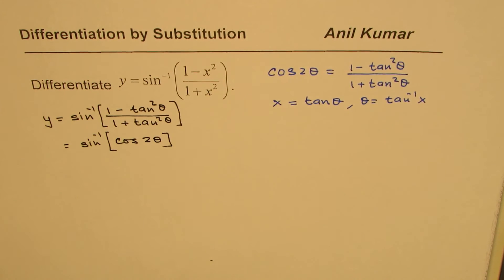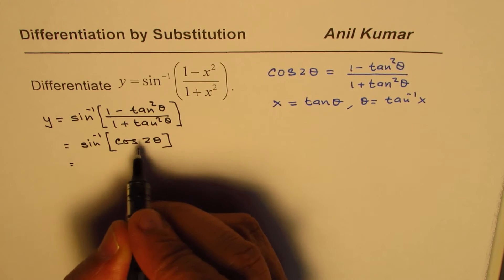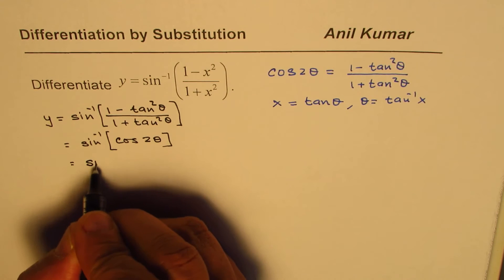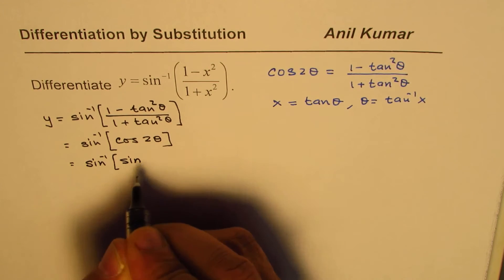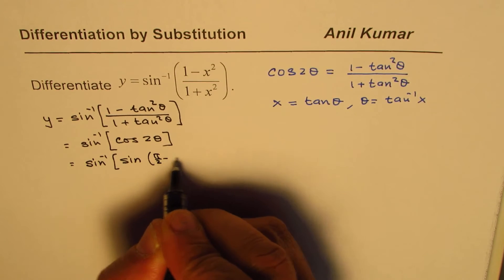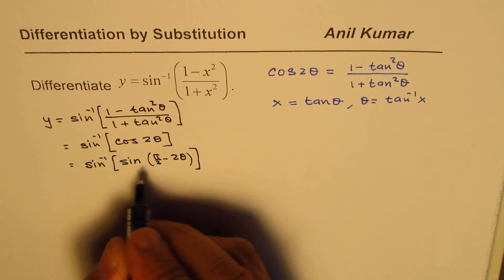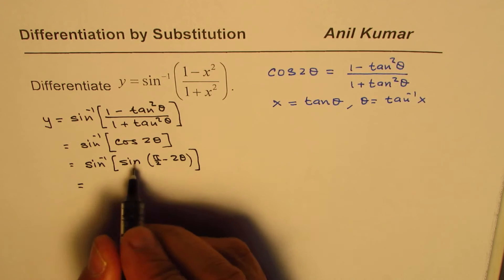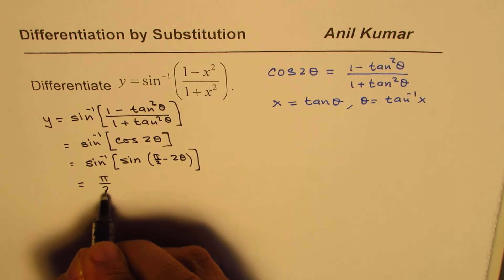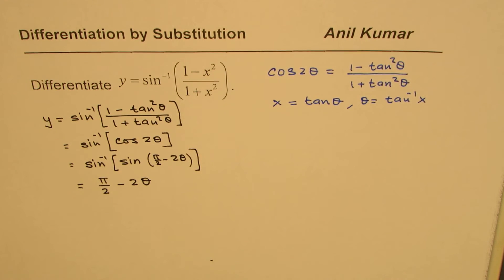How will that help us? We need to convert this to sine. The idea is to get sine inside. So we could write the co-function identity here. We can write this as sine of (π/2 minus 2θ). That is how we could actually simplify it.